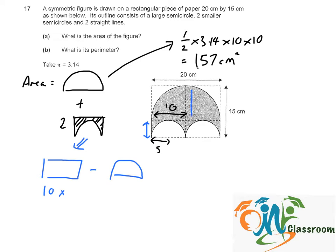Because the radius of the big semicircle is 10, so 15 minus 10 equals to 5. So 10 times 5 minus the area of the small semicircle. That will be half times 3.14 times 5 times 5. So equals to 50 minus 39.25.